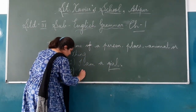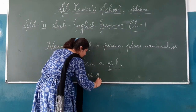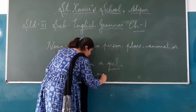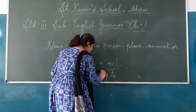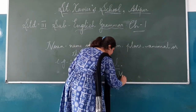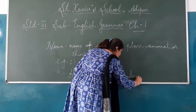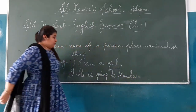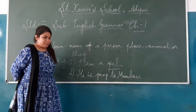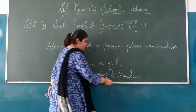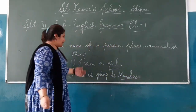The next example is: 'He is going to Mumbai.' Now what is the noun here? In 'He is going to Mumbai,' the noun is Mumbai — it is the name of a place.